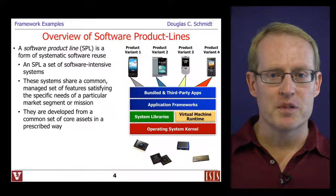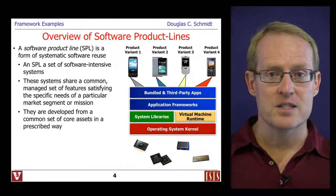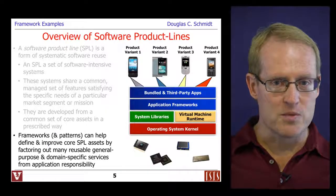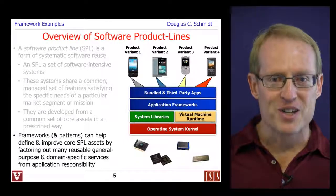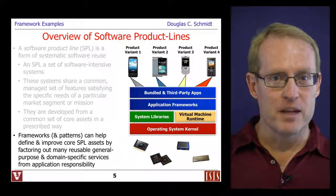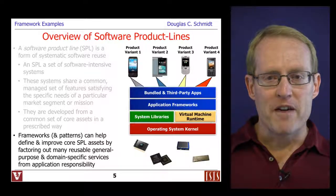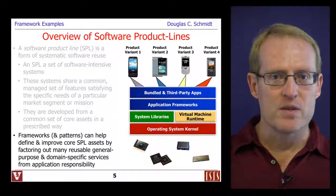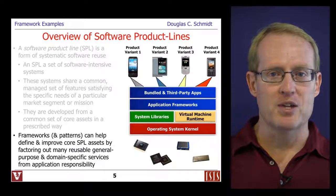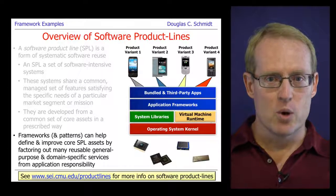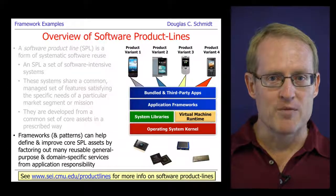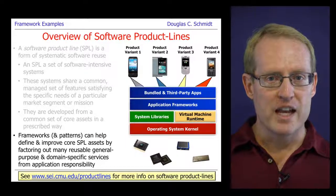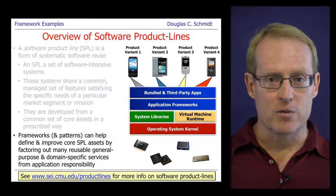Software product lines are developed from a common set of core assets in a prescribed way. Frameworks and patterns can help to develop, define, and improve software product lines by factoring out many reusable general purpose and domain specific services from the responsibility of the application developers. If you take a look at this URL, you'll see a lot more information about software product lines by some of the groups at the Software Engineering Institute who have pioneered and promulgated this perspective for a number of years.